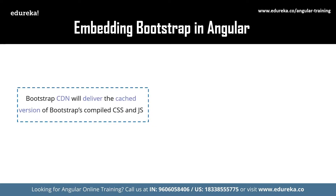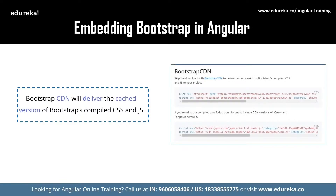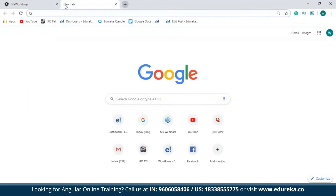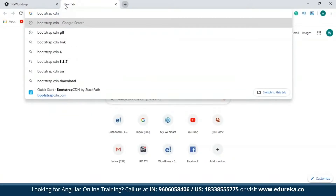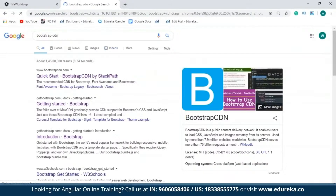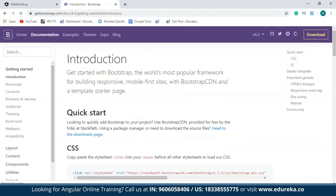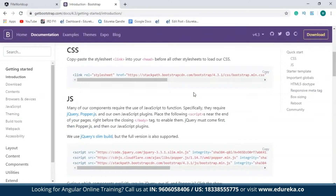First, let's see how you can embed Bootstrap by making use of the Bootstrap CDN. Using the Bootstrap CDN, you can make direct use of the Bootstrap Content Delivery Network, which will deliver the cached version of Bootstrap's compiled CSS and JavaScript to your Angular application. To access that, you can directly go to the Bootstrap CDN link. I'll just type in 'Bootstrap CDN' and hit enter. As you can see, I have all the CSS and JavaScript that I need for my project.